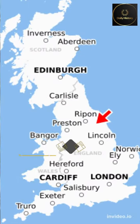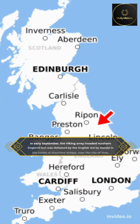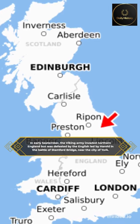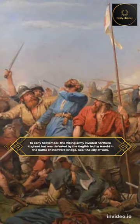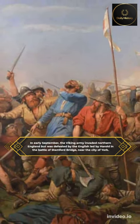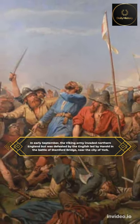In early September, the Viking army invaded northern England but was defeated by the English led by Harold in the Battle of Stamford Bridge, near the city of York.